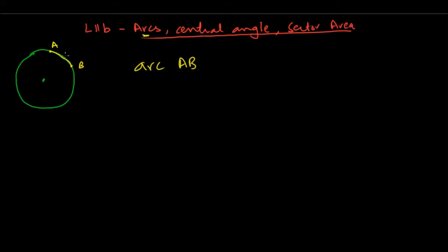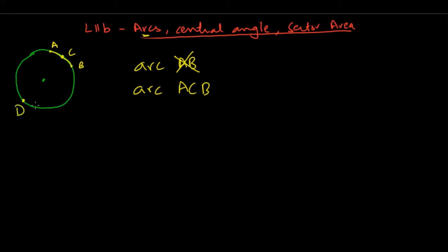So the way you refer to an arc is via three points. You put another point — let's say point C — and you say arc ACB. Now it's very clear that you want this arc going through point C. If you want the longer arc, you put a point D there and say arc ADB. This is how the GRE always refers to arcs — always with three points.